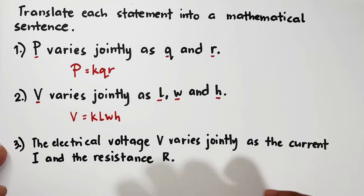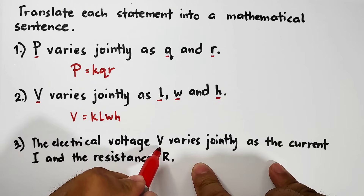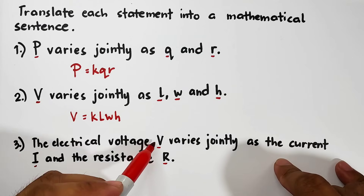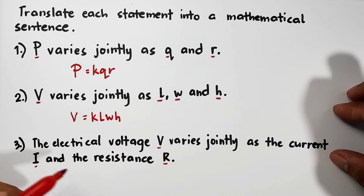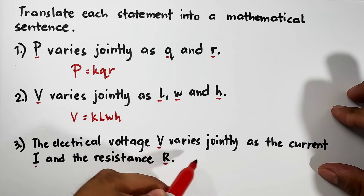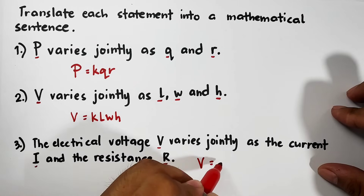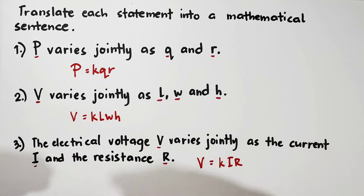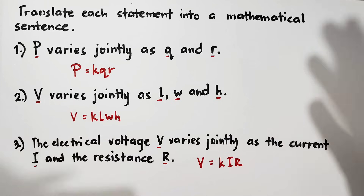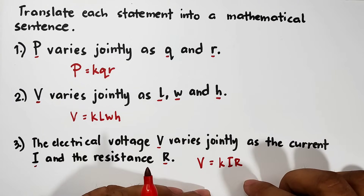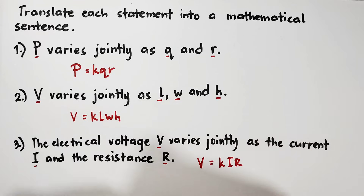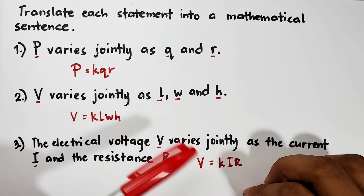Let's move on with item number three: the electrical voltage V varies jointly as the current I and the resistance R. So we have three variables V, I, and R. To translate this into a mathematical sentence, we start with V, that is equal to k times I and R. Since V, I, and R are written in uppercase, you need to write them as big letters in the mathematical sentence. So we are done with the simple definition of joint variation and translating these statements into mathematical sentences.